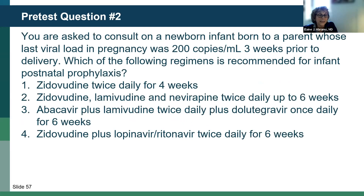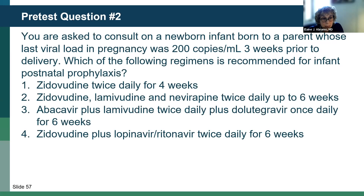For post-test question two, you're asked to consult on a newborn infant born to a parent whose last viral load in pregnancy was 200 copies per ml three weeks prior to delivery. The correct answer is number two — zidovudine, lamivudine, and nevirapine twice daily up to six weeks — because the viral load was 200, which is above 50 copies. The baby is not considered low risk, falls into a high-risk category, and would receive what is described as presumptive treatment with a three-drug regimen for up to six weeks. The other options are not recommended in this scenario.